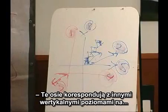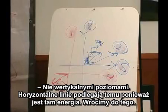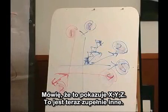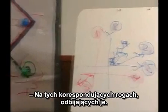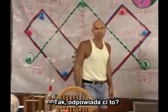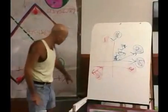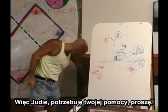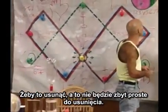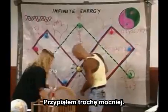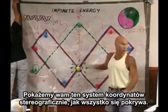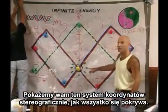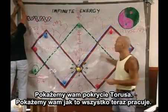Those axes correspond to the horizontal lining up — there's an energy, we'll come back to that. I'm saying that this is showing XYZ. This is totally different now. You've taken that from the fact that they're complements of each other, on the corresponding corners mirrored. What I'm about to show you is we're going to show you this coordinate system, stereographic, everything overlapping. We're going to show you the skin of the toroid. We're going to show you how this all works now.